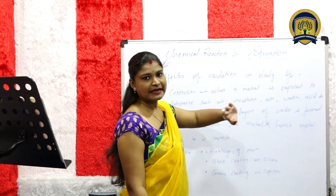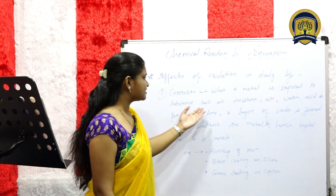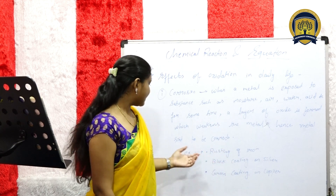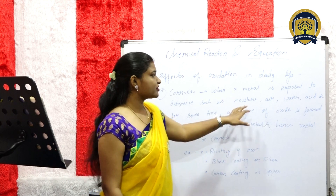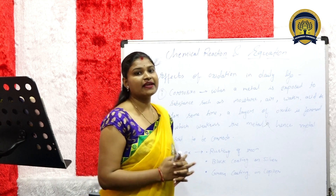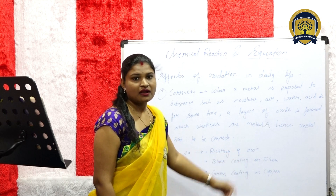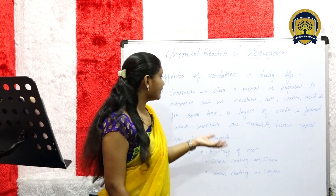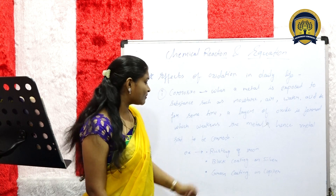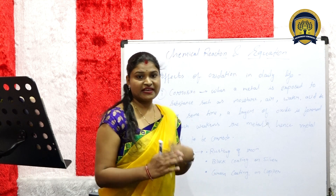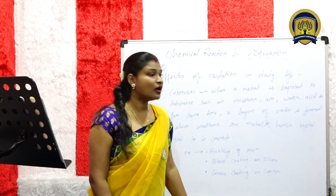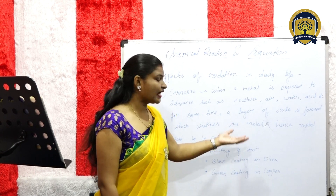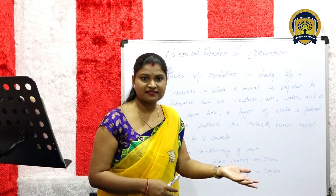Next topic: Effects of Oxidation in Daily Life. First, corrosion. When a metal is exposed to substances such as moisture, air, water, and acid for some time, a layer of oxide is formed which weakens the metal; hence the metal is said to be corroded. For example, rusting of iron is the first example of corrosion. Second, black coating of silver. The black coating is also due to corrosion, and copper also forms a coating due to corrosion. Prevention of corrosion: we can prevent corrosion by painting or greasing the iron or metal.